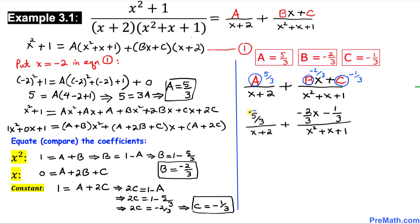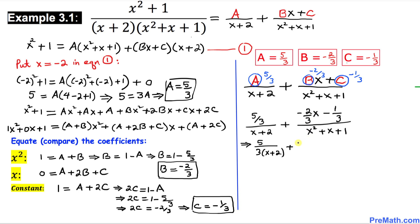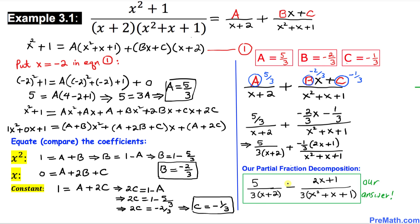Now in our partial fraction decomposition we replace a with 5/3, b with negative 2/3, and c with negative 1/3. Simplifying, the first fraction becomes 5 over 3 times x plus 2, and for the second fraction we can factor out negative 1/3 from the numerator to get negative 1/3 times 2x plus 1, divided by x squared plus x plus 1. And this is our final answer for the partial fraction decomposition.